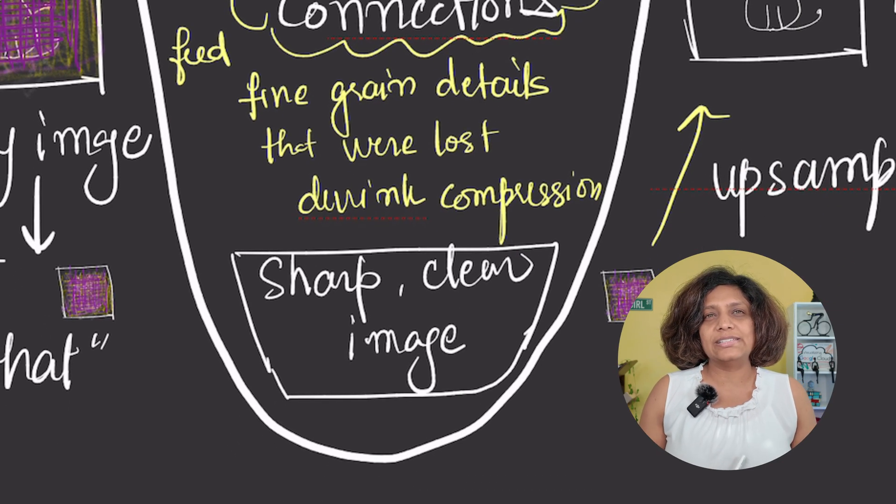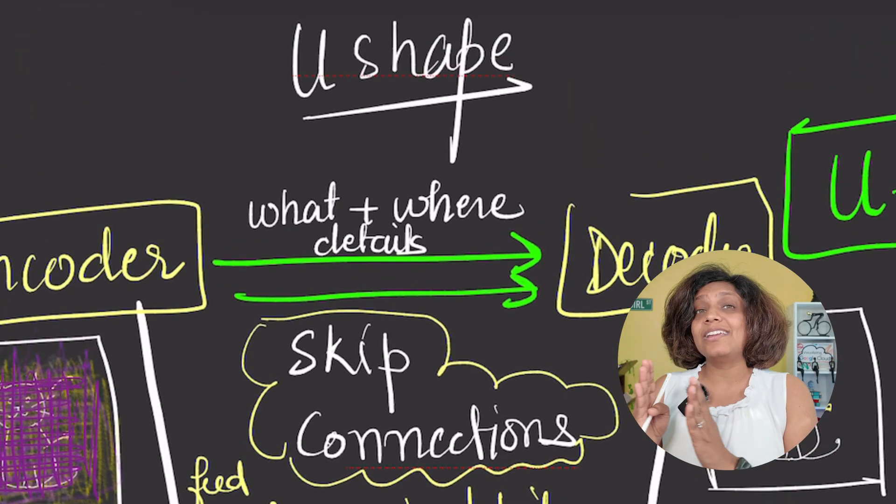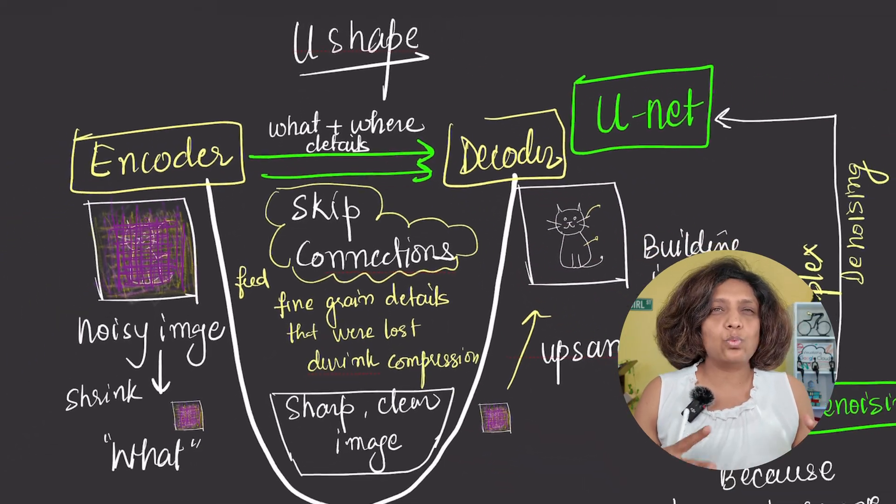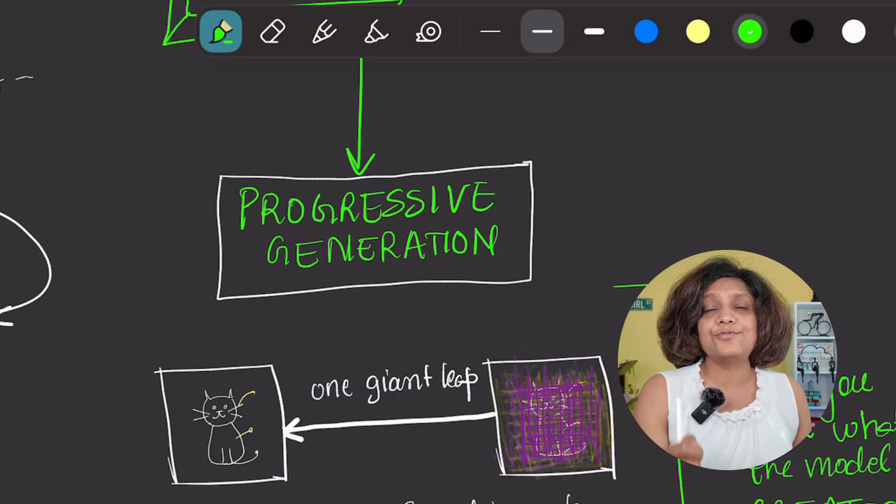This is how the model creates such sharp, detailed images by precisely understanding both the 'what' and the 'where.' This powerful U-net structure is the workhorse of our denoising autoencoders. Let's look at the next key idea: progressive generation.